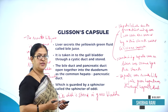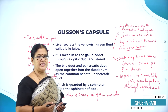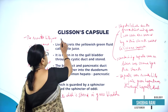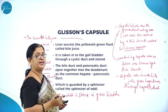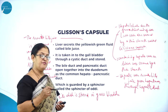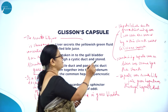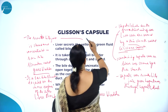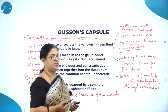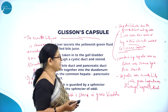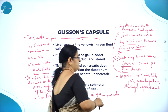Moving on to the next very important concepts of this chapter called Digestion and Absorption. Glisson's capsules — we already know that the liver cells, or hepatic cells, or hepatic lobules are the functional units of liver, which are covered by a thin sheath called Glisson's capsules.